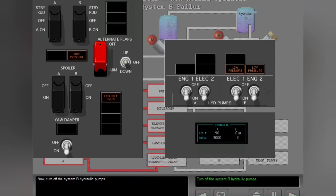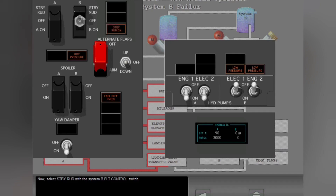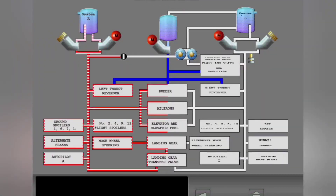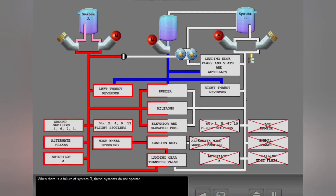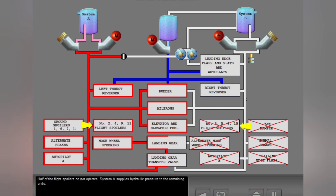Turn off the System B hydraulic pumps. Select standby rudder with the System B flight control switch. These systems do not operate. The rudder, ailerons, elevator, and elevator feel continue to operate because System A supplies pressure to these units. Half of the flight spoilers do not operate; System A supplies hydraulic pressure to the remaining units.